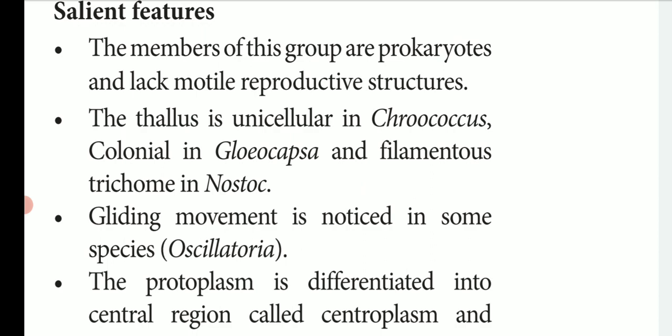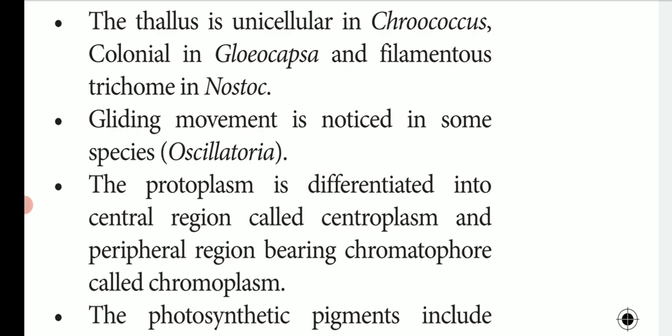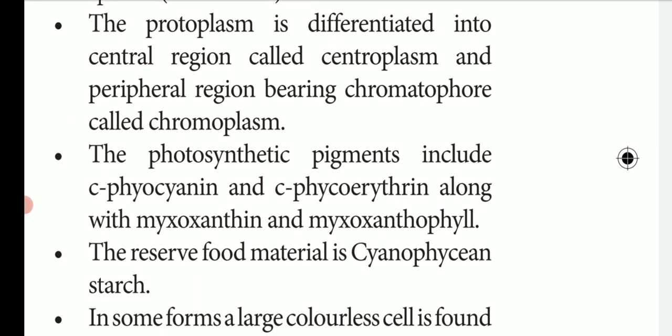The filament is a thin thread-like structure, as in Nostocaceae. They show gliding movement — for example, Oscillatoria shows gliding movement. They contain photosynthetic pigments in the chromatophores — C-phycocyanin, myxoxanthin, and mixoxanthophyll — allowing them to prepare their own food. Their reserve food material is starch.